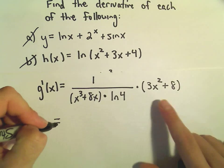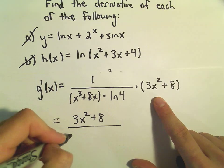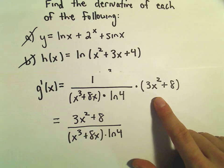And now we can write the 3x squared plus 8 in the numerator all over x cubed plus 8x times the natural logarithm of 4.